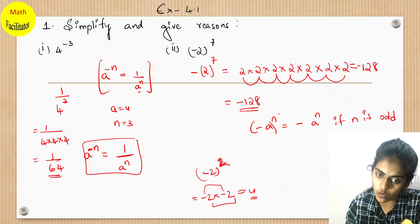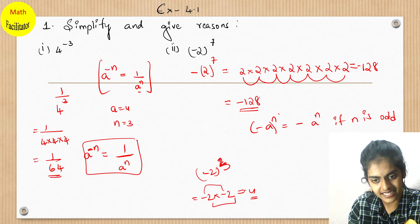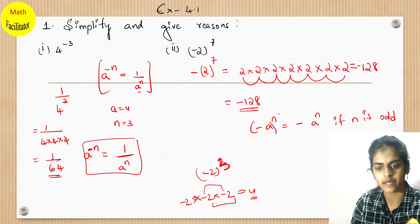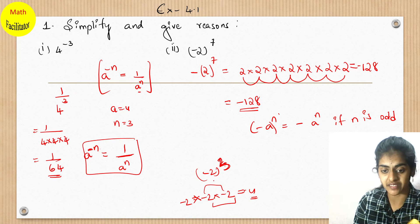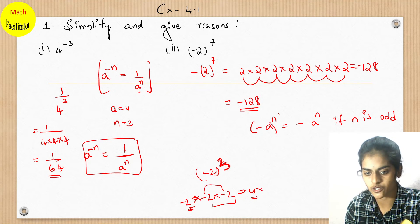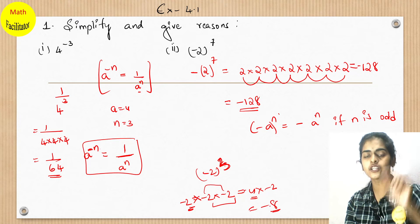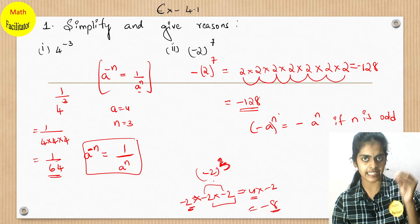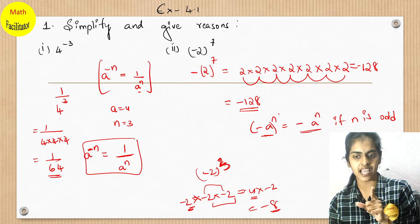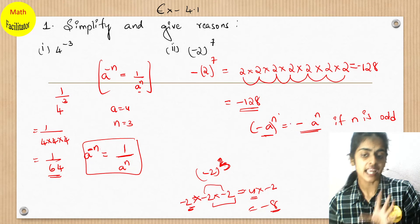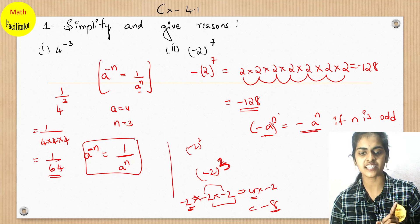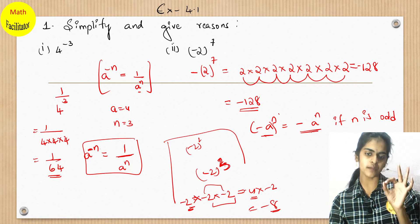But if you have minus 2 whole cube, here 3 is an odd number. So you multiply minus 2 three times: minus 2 into minus 2 gives plus 4, then plus 4 into minus 2 gives minus 8. So whenever the base is negative and the power is an odd number, the answer will have a negative sign. If the base is negative and the power is even, like minus 2 whole square, then the answer will be positive.